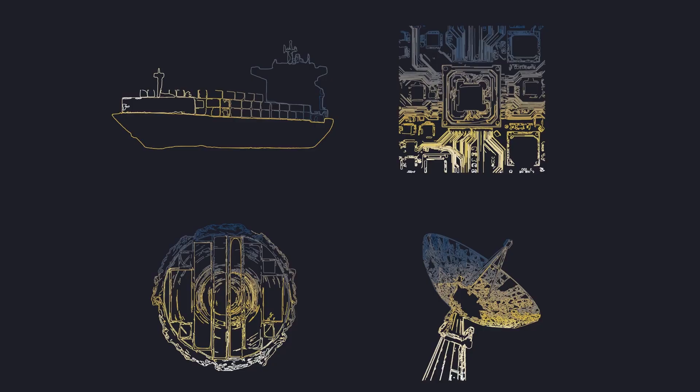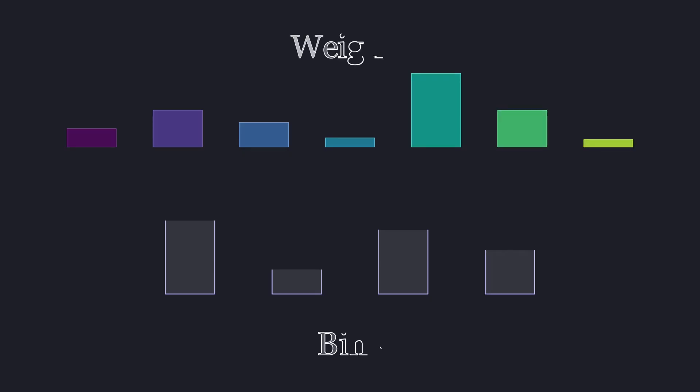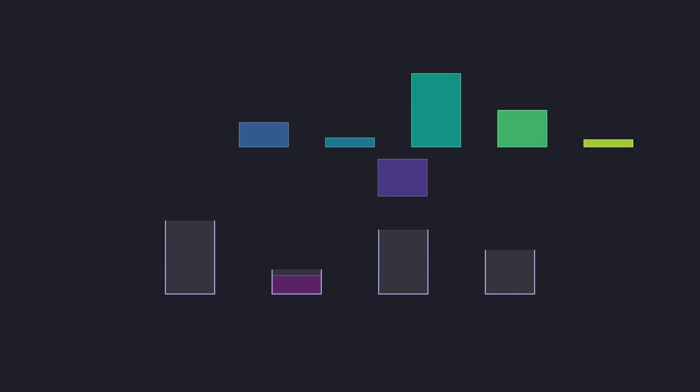These boxes and containers are more commonly called weights and bins. One variant of the bin packing problem is if you have a number of variable-sized weights and a number of variable-sized bins, and you need to find some solution that actually packs all of the weights without overflow.